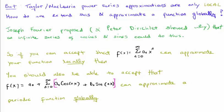The usual power series used in order to approximate functions are the Taylor and McLaren. However, we want to expand this to approximate a function globally. Joseph Fourier suggested that cosines and sines inside an infinite series could approximate a function globally. So if you can accept that a power series of the following form is able to approximate your function locally, then you should have no difficulty in accepting that a power series in cosines and sines or a Fourier series can approximate your function globally.